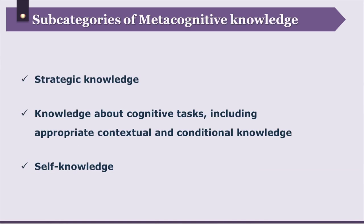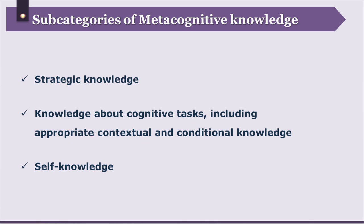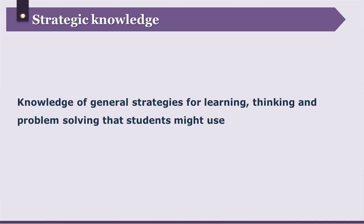The subcategories of metacognitive knowledge are: strategic knowledge, knowledge about cognitive tasks including appropriate contextual and conditional knowledge, and self-knowledge. Strategic knowledge refers to the general strategies teachers make learners use — such as drawing concept maps for complex content, paraphrasing or summarizing lengthy content so that major points are remembered, and planning activities so that learners organize themselves to meet their goals. Strategic knowledge is the knowledge of general strategies for learning, thinking, and problem solving that students might use.